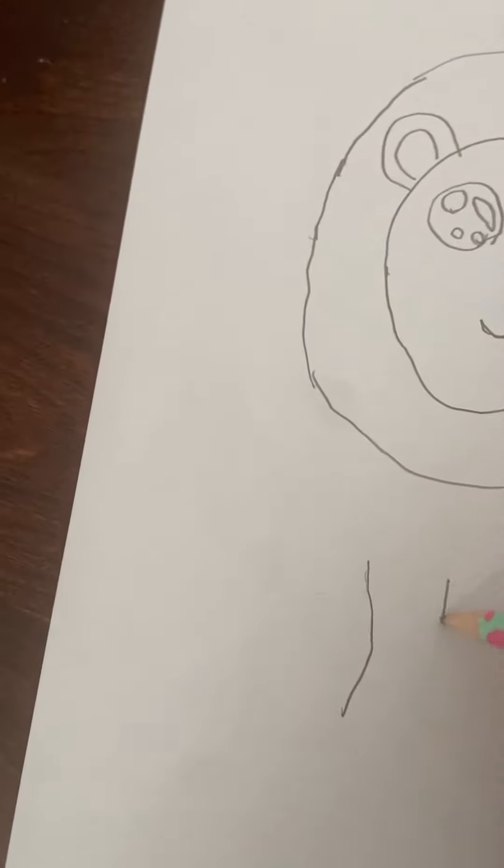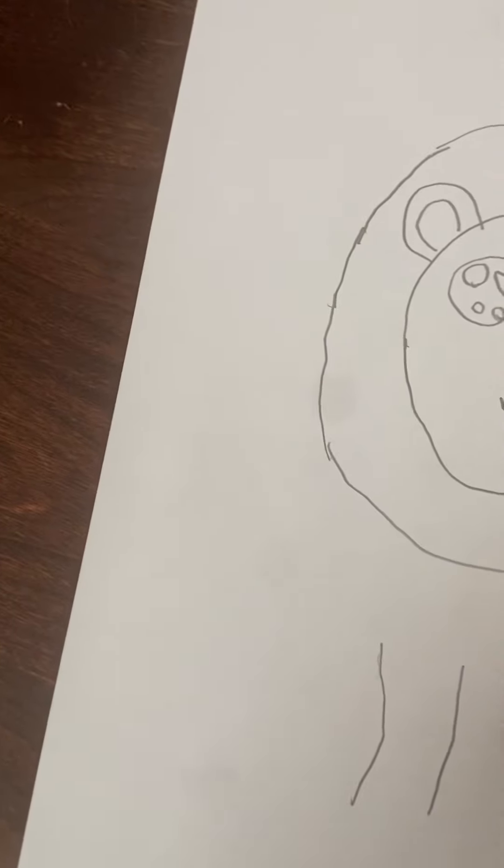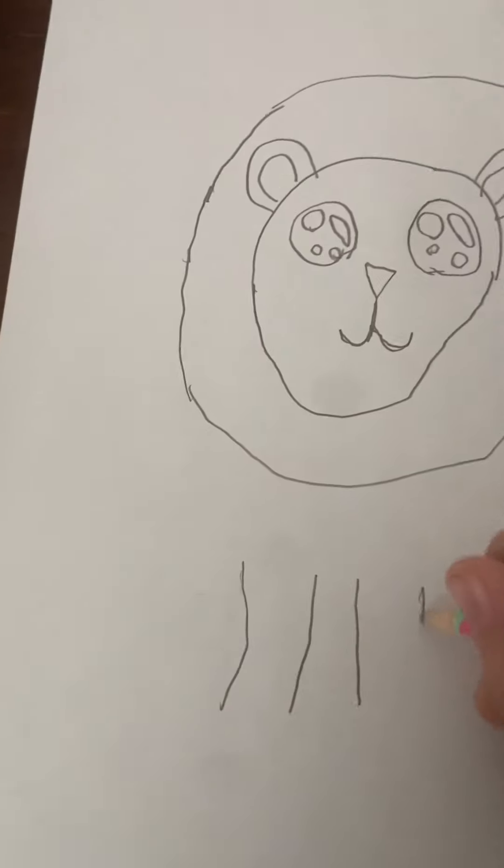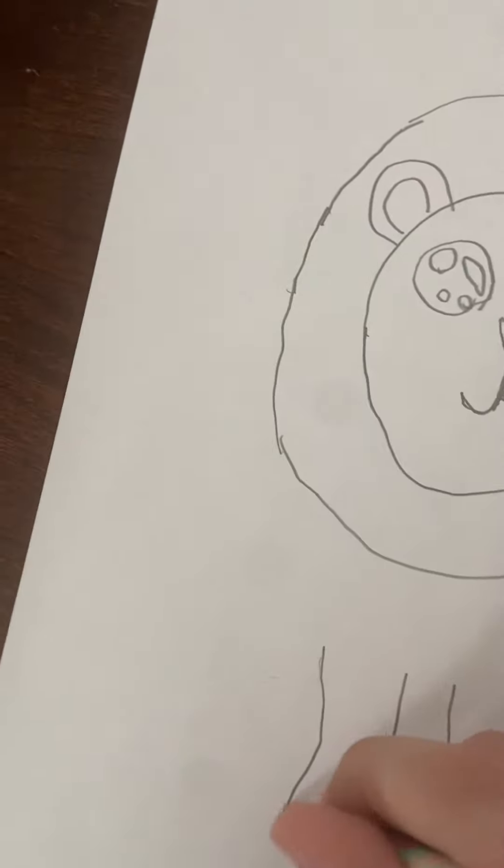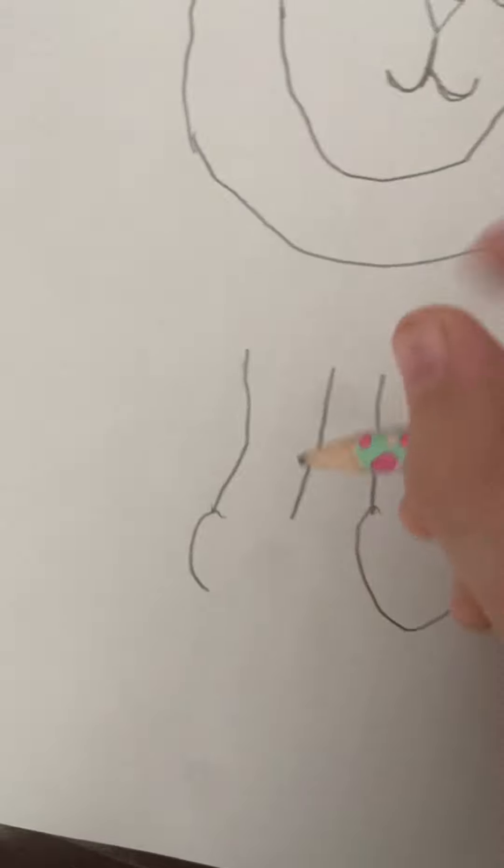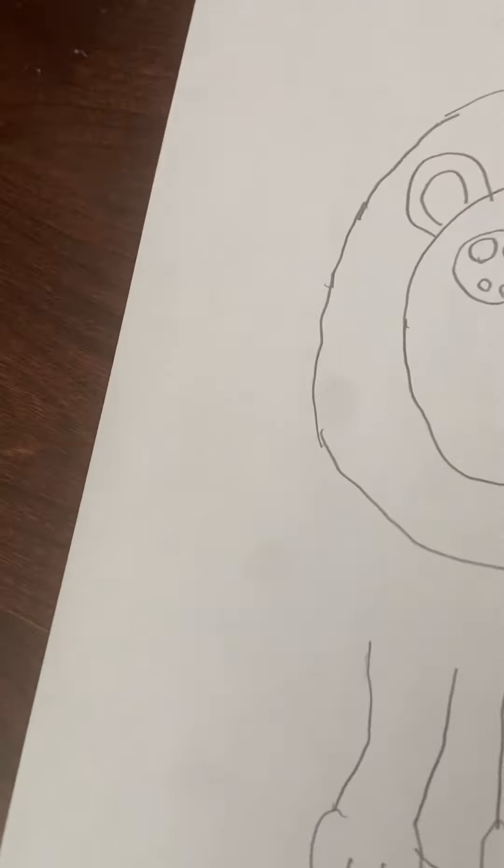First let's just draw two of these and then do the same thing on this side. Then I'm gonna make little, like, half of a circle over here and then two things like that, and then do it again.